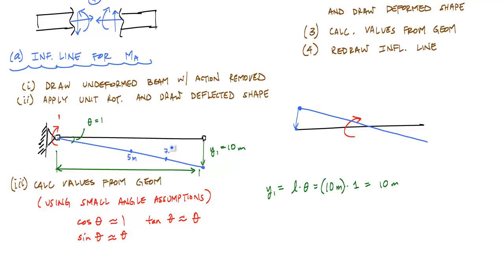And if you look at this, the influence line is really just a multiplier for a unit concentrated load moving across the beam, and it tells you exactly what the moment is at A.